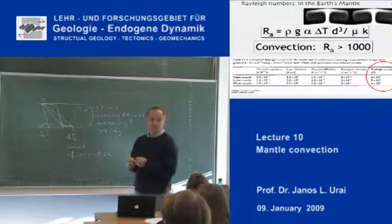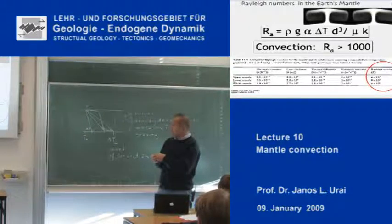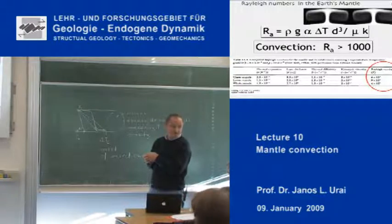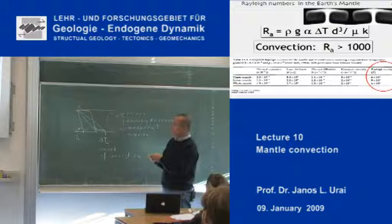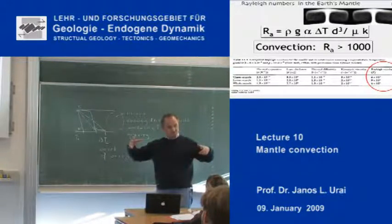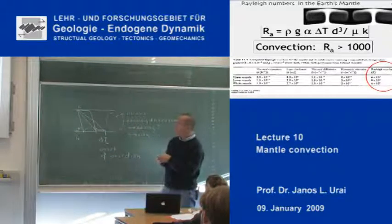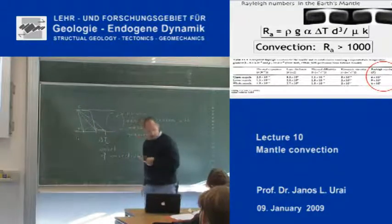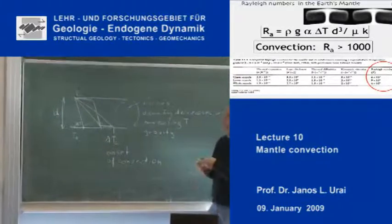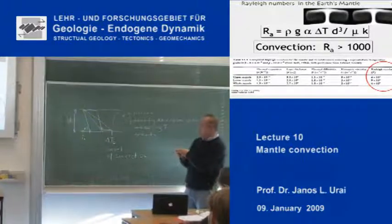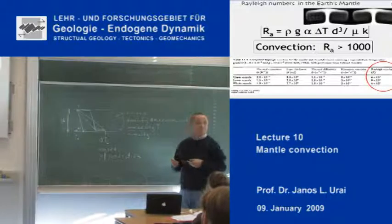The Rayleigh number, Ra, is a very famous dimensionless number from thermodynamics. It is calculated as follows: rho is the density of the material, g is the acceleration of gravity, alpha is the coefficient of thermal expansion — how much the material expands when you heat it — delta T is the temperature difference between the top and the bottom, and d to the third, where d is the thickness of the layer. Notice that d appears with a power of 3. Below the line in the formula, we divide by the viscosity mu and k, which is the thermal conductivity.